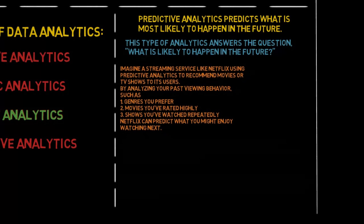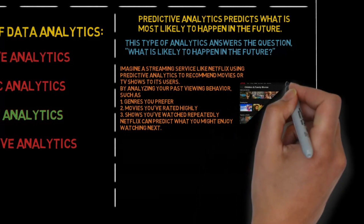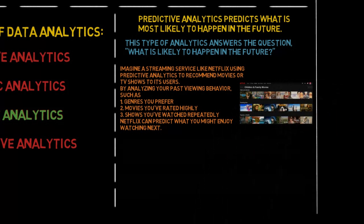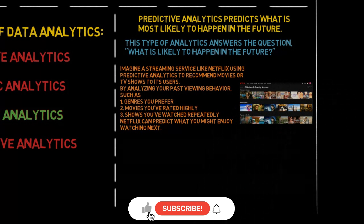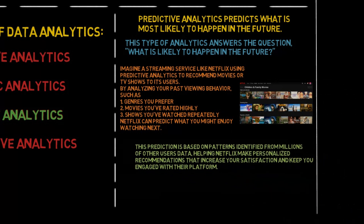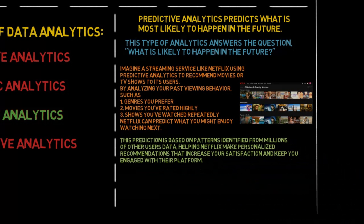Imagine a streaming service like Netflix using predictive analytics to recommend movies or TV shows to its users. By analyzing your past viewing behavior — such as genres you prefer, movies you've rated highly, and shows you've watched repeatedly — Netflix can predict what you might enjoy watching next. This prediction is based on patterns identified from millions of other users' data, helping Netflix make personalized recommendations that increase your satisfaction and keep you engaged with their platform.